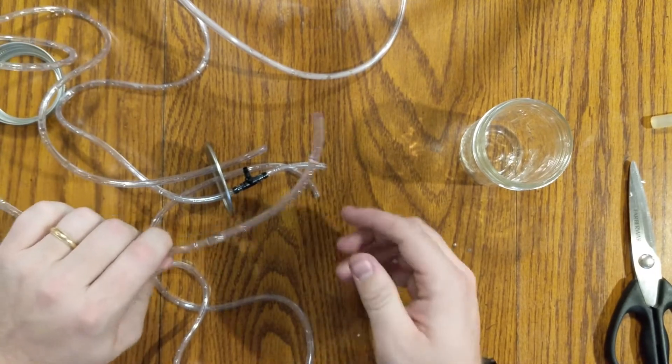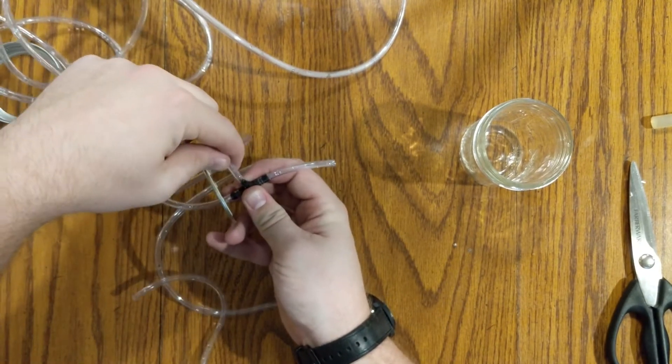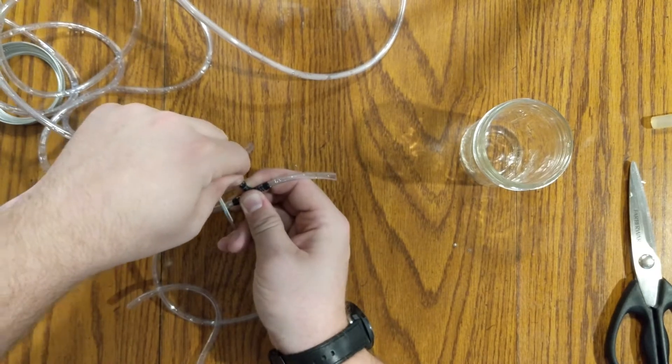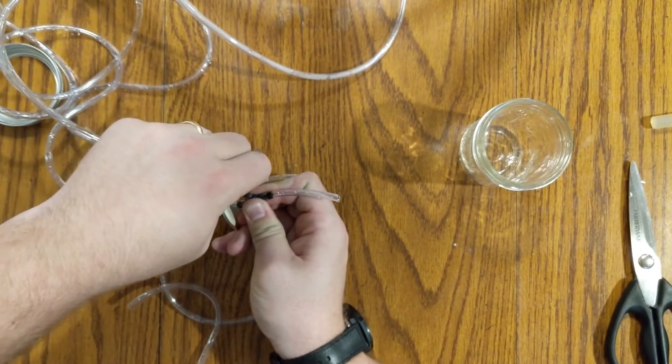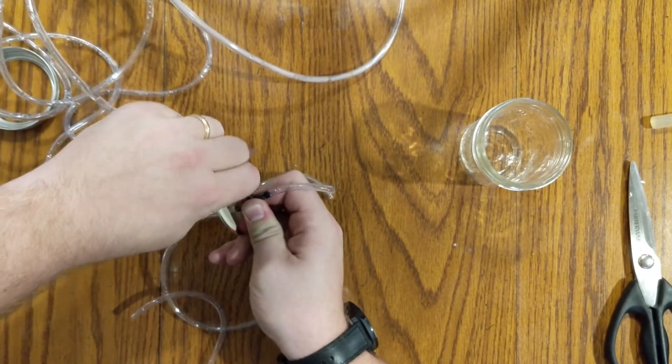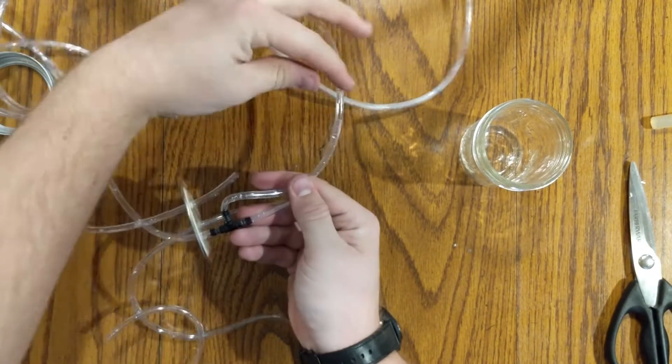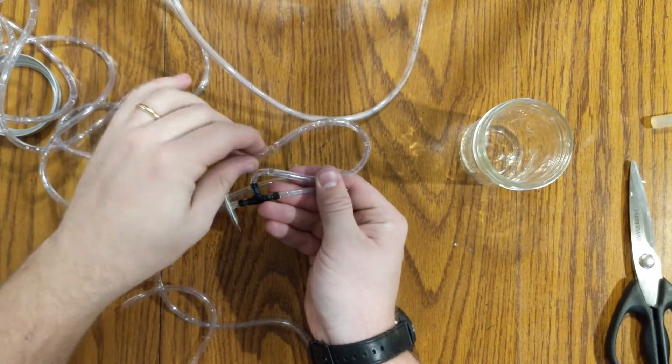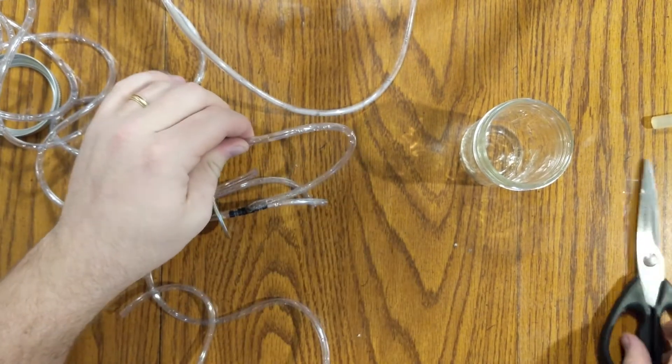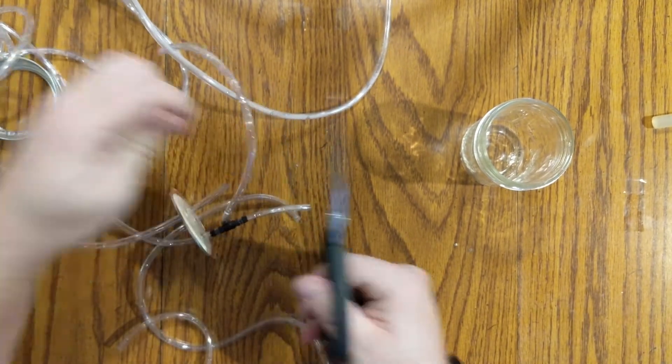So next we're going to take another piece of hose and put it on the T portion. We want this hose to be able to go all the way to the bottom and then loop all the way back up to the top without kinking. This is very important. So get that measurement and cut it.